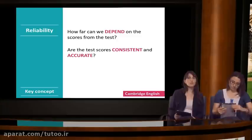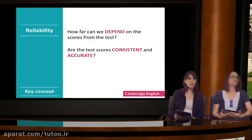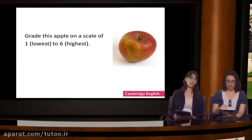So far, we've spent some time looking at issues related to the construct of a test, and how to test that construct through the most appropriate tasks. Now let's move on to the idea of reliability. As a reminder, reliability refers to how far we can depend on the score from the test - in other words, how consistent and accurate are the scores from the test.